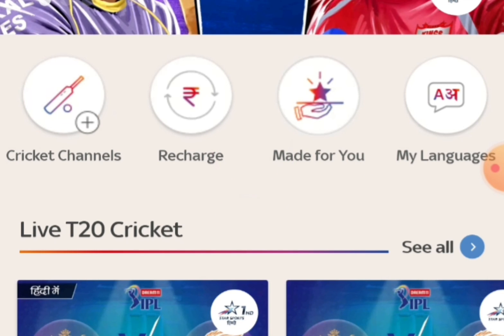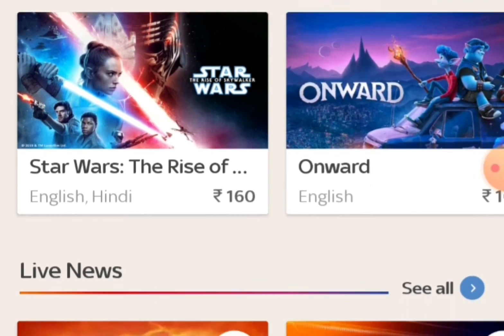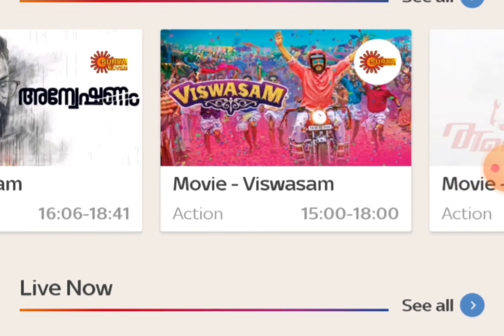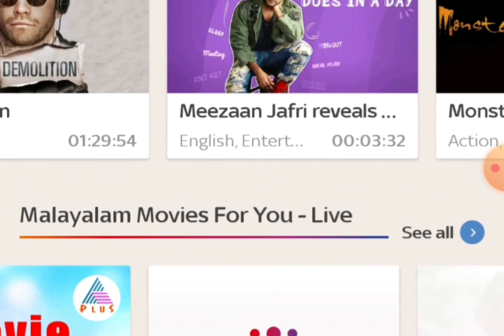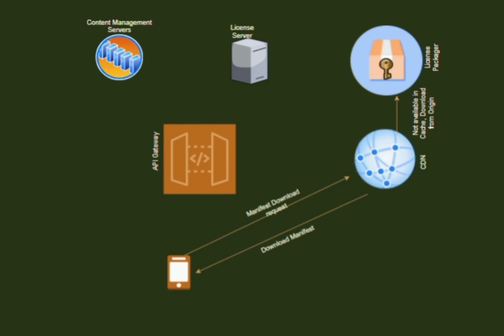Finally, let us see what happens when you open an OTT app. First, it makes a request to the content management server through the API gateway and gets all the required details to populate the homepage. Whenever the user clicks on an asset to play, it contacts the content management server again to get the manifest file for that asset. Once it receives the manifest file, it contacts the CDN to download it. The CDN checks if the requested file is present in cache — if so, it serves from cache; otherwise the CDN contacts the origin server and returns the manifest file to the requesting device.